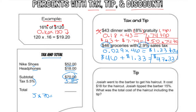To find the total amount they would spend including tax: $70 plus $3.85 tax equals $73.85 total cost.